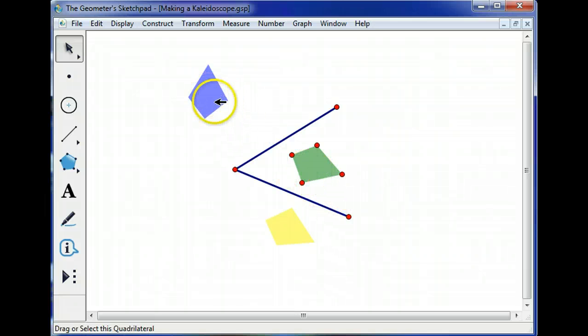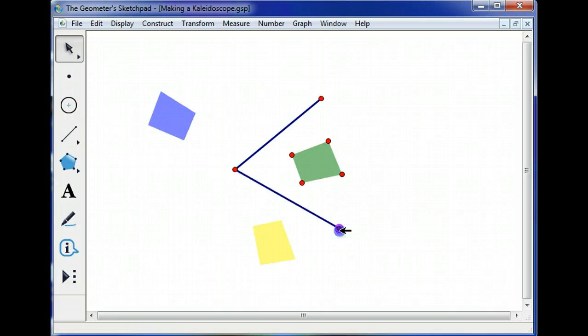Okay, so what's happened? Well, both of these polygons are reflections of the original, and if I change the shape of the original, they also change shape. This one is reflected over this segment, and both of these are reflected over this segment.